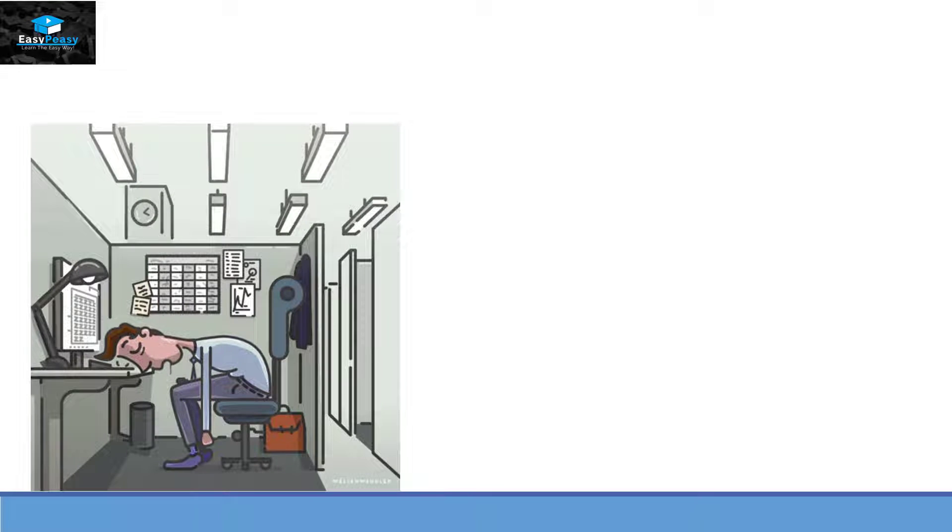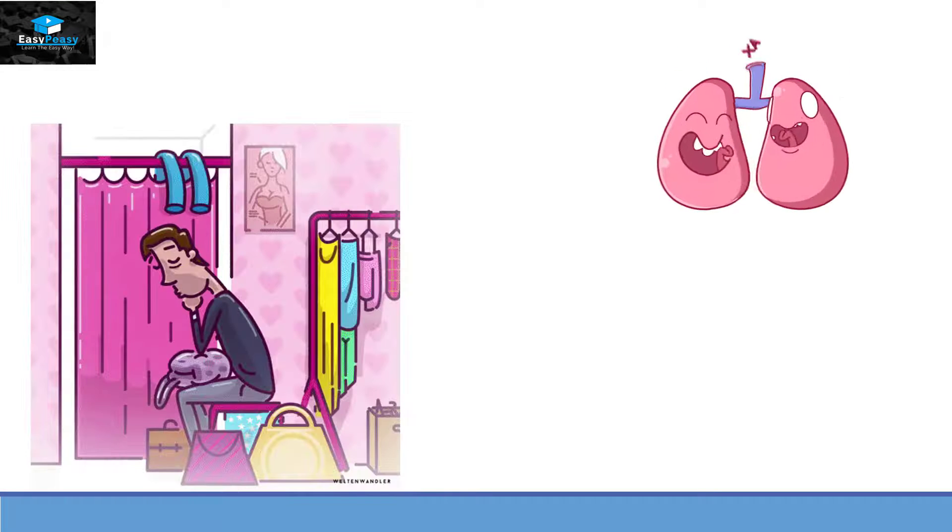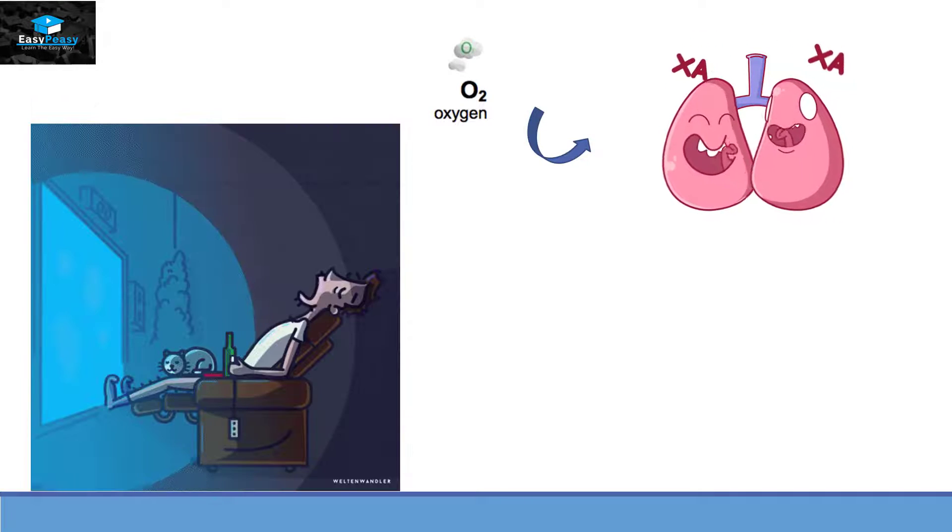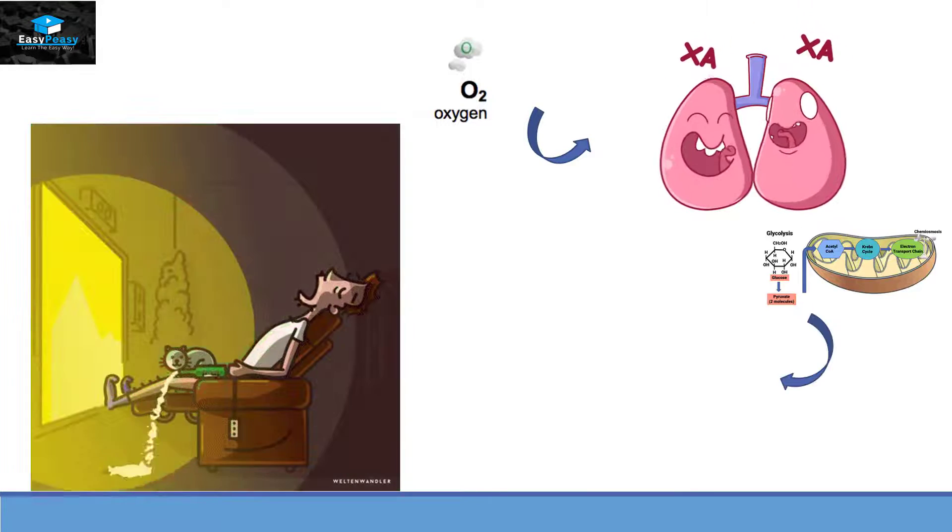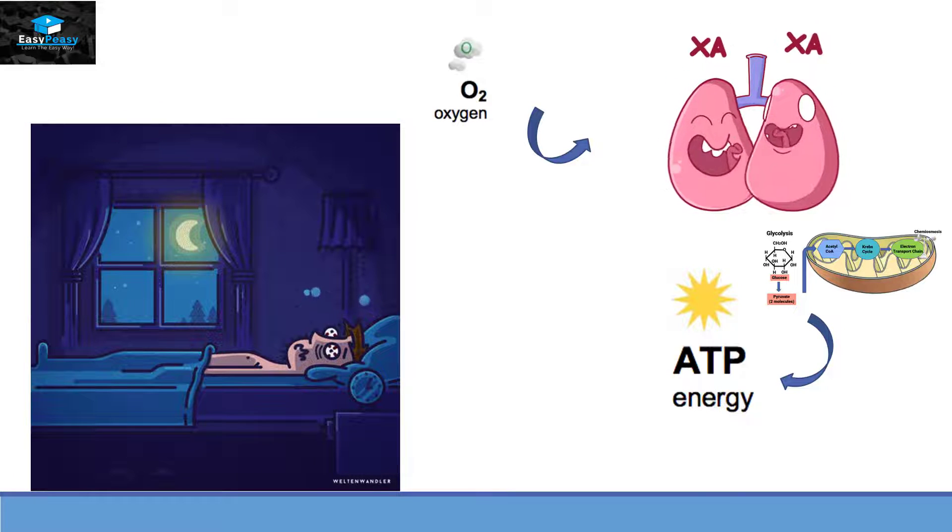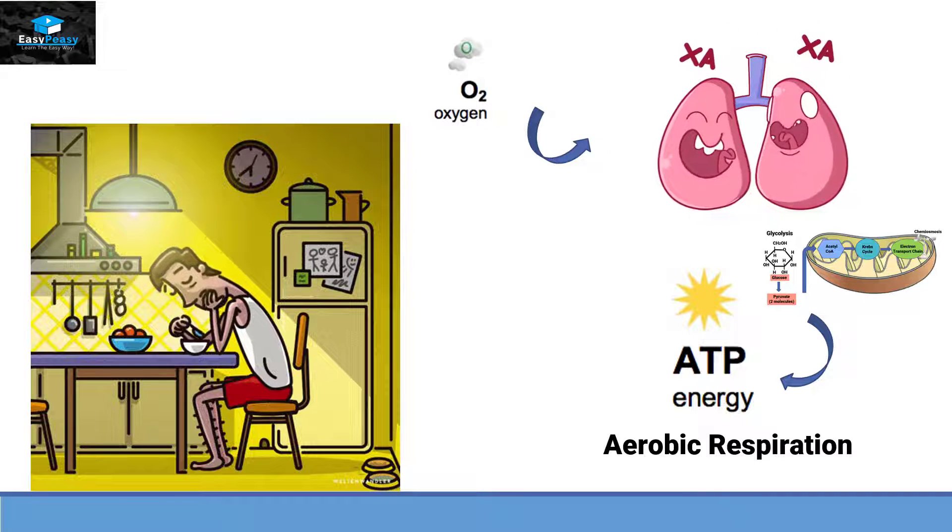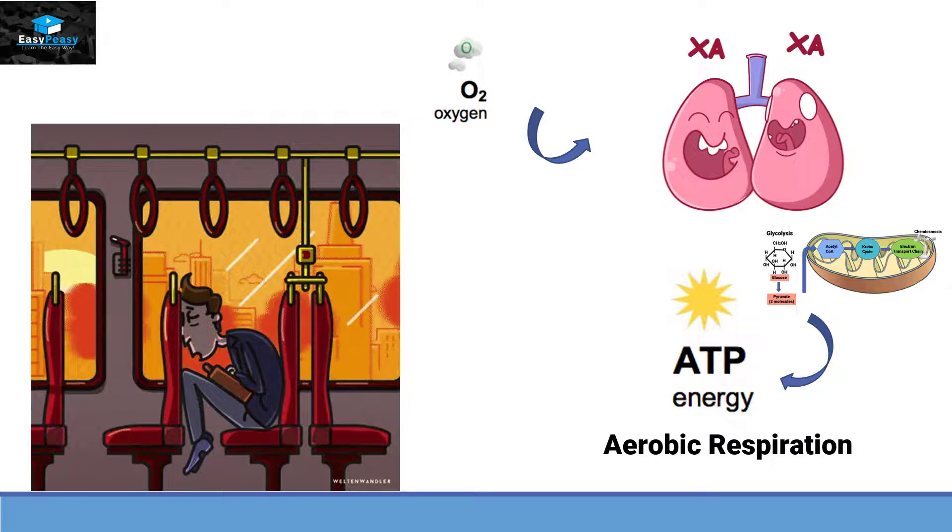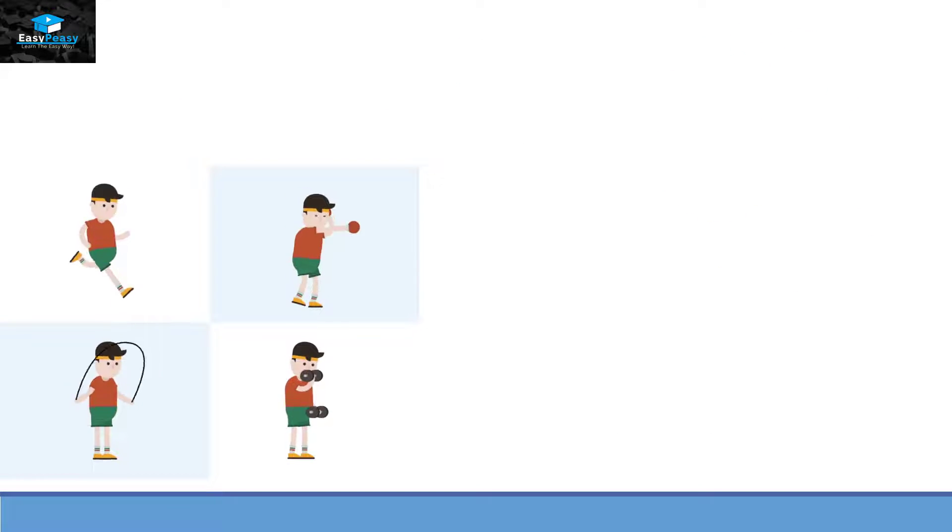So at those times our lungs can happily take enough oxygen to provide energy, and this type of respiration is called aerobic respiration. But at times when we are exerting ourselves, like running in a race, boxing, or doing exercise, our body needs more energy than normal.